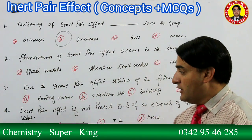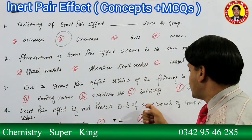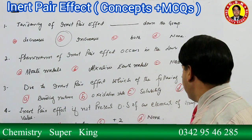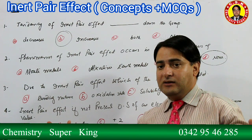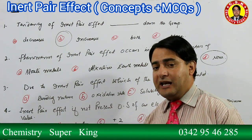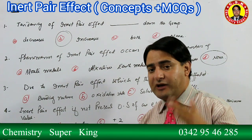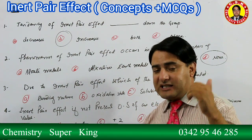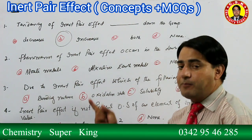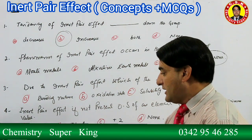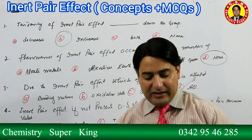Next MCQ: if Inert Pair Effect is not present, the oxidation state of an element of Group 5 will have the maximum value. If Inert Pair Effect does not occur, the maximum oxidation state equals the group number. So for Group 5, the maximum oxidation state should be +5. The answer is +5.